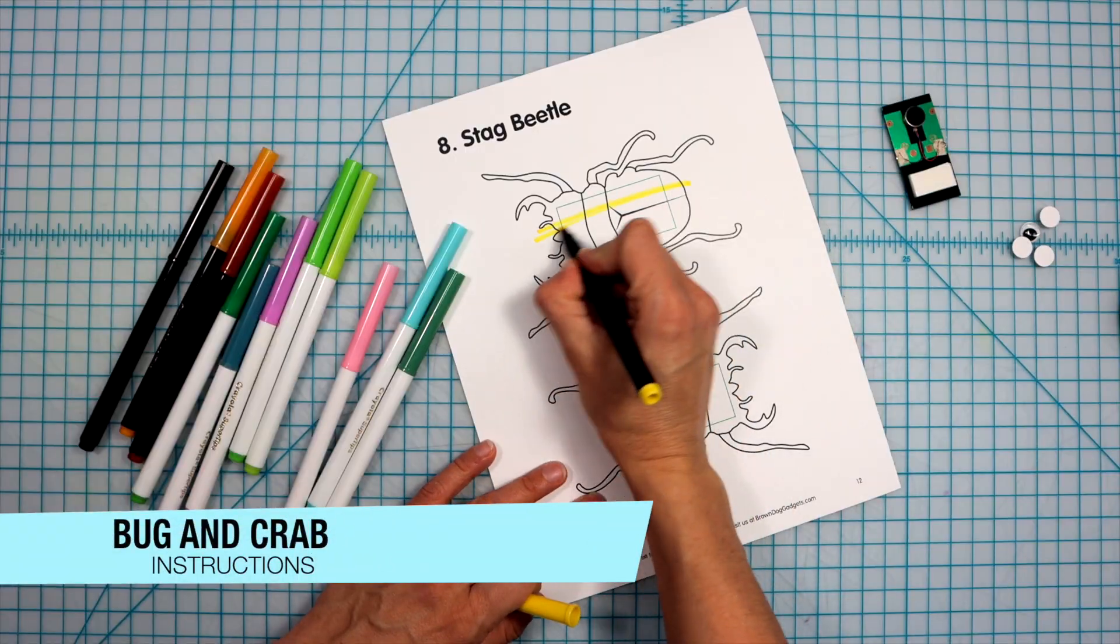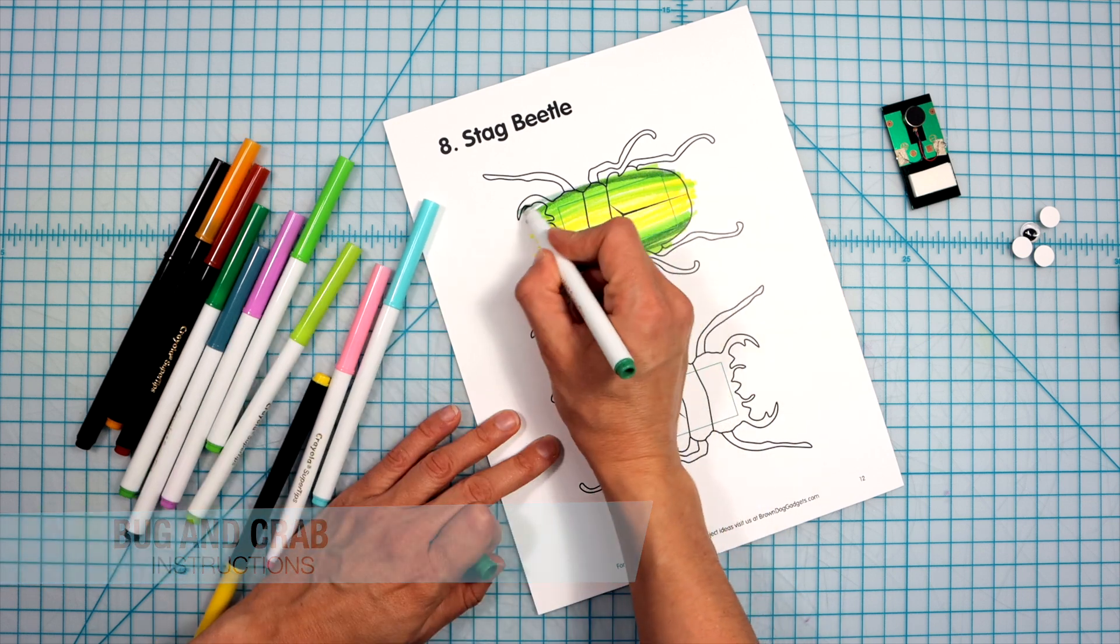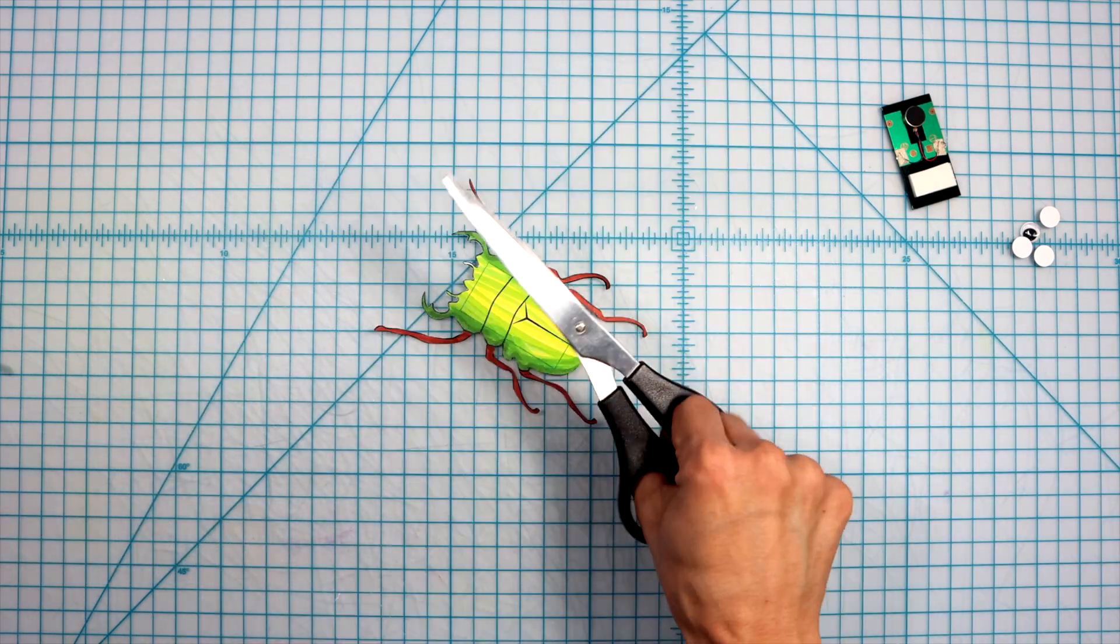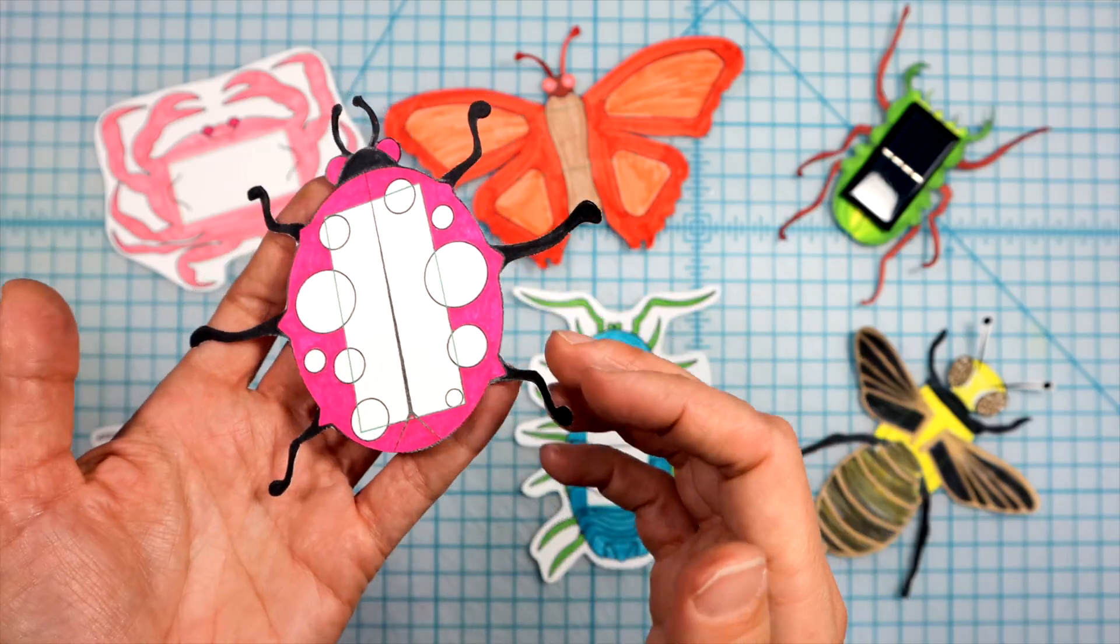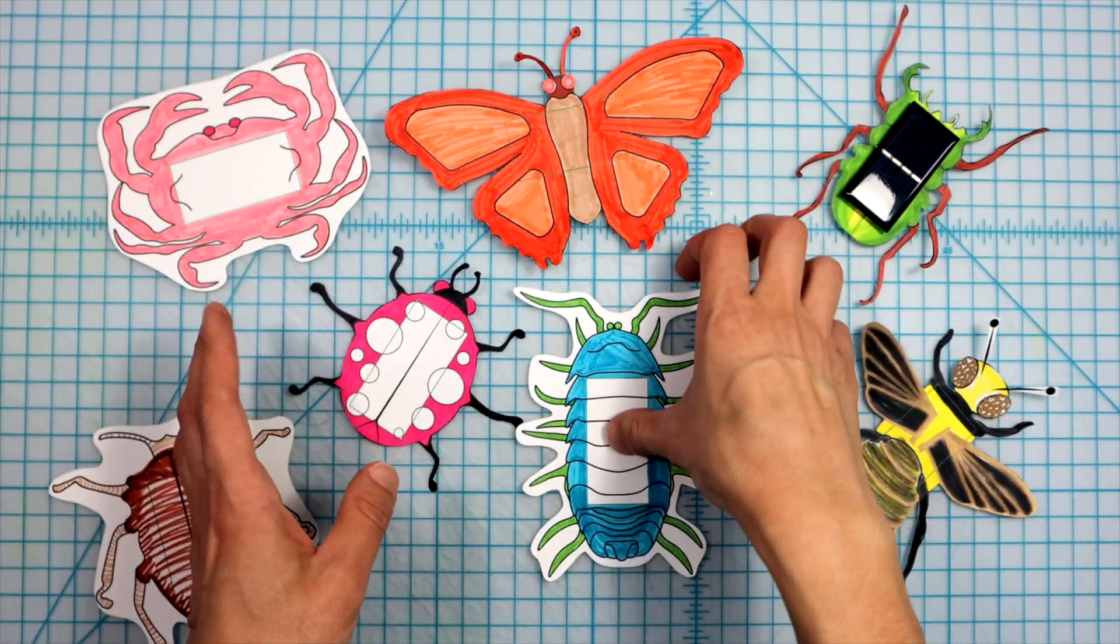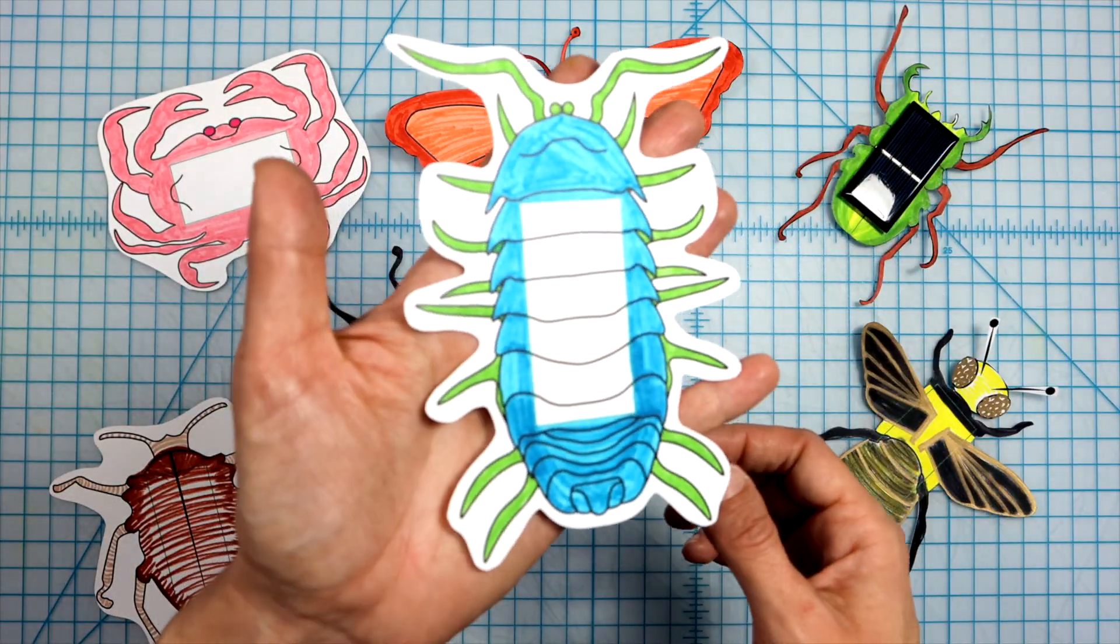Color and cut out the bug body of your choice. You could choose to cut the legs out along the lines or to give it a border to make it easier to cut.